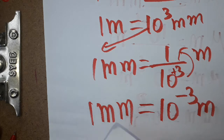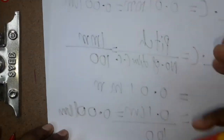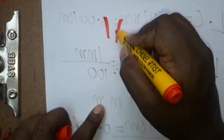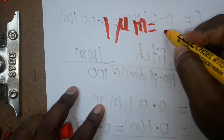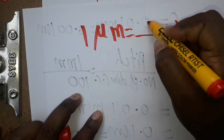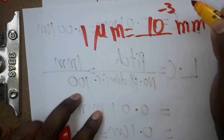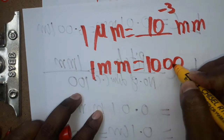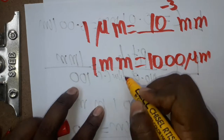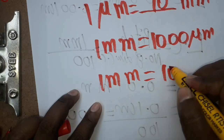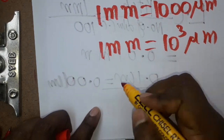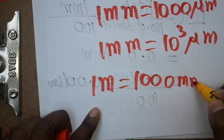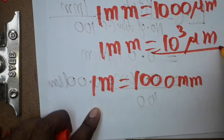Now, one micrometer equals 10 power minus 3 millimeters. That means one millimeter is equal to 1000 micrometers, or 10 power 3 micrometers.